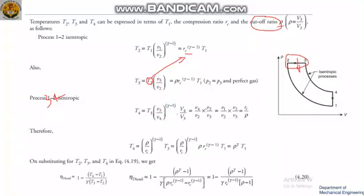Rewriting V3/V4 by multiplying and dividing by V2: V3/V4 equals (V2/V4)·(V3/V2). Since V4 equals V1, this becomes (V2/V1)·(V3/V2), where V1/V2 is RC and V2/V3 is 1/ρ, giving V3/V4 equals ρ/RC. Therefore T4 equals (ρ/RC)^(γ−1) times T3, and substituting T3 gives T4 equals ρ^γ times T1.